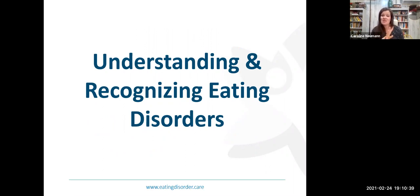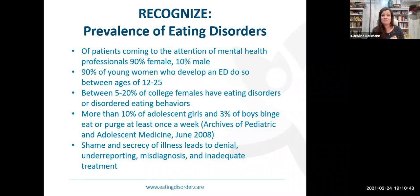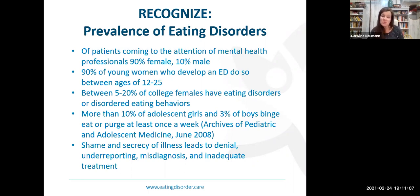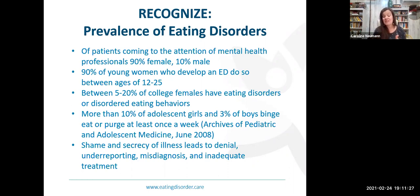This next section is about understanding and recognizing eating disorders. Looking at prevalence: there is a high prevalence of females presenting to treatment with eating disorders, but that does not mean males do not struggle. Thankfully, the number of male-identifying patients presenting to treatment is on the rise — there has historically been severe underreporting and stigma. The main age of onset for eating disorder symptomatology is 12 to 25. Shame and secrecy thrive in eating disorders and lead to denial, underreporting, misdiagnosis, and inadequate treatment.